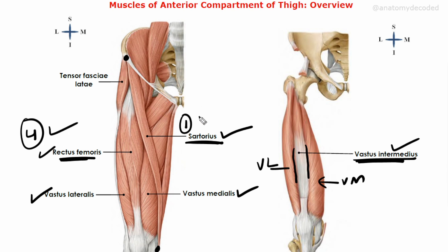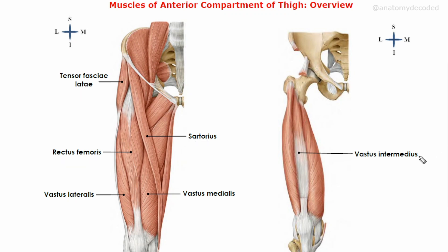Quadriceps femoris accounts for four muscles, sartorius one — that's five. There is also tensor fasciae latae, present on the lateral aspect of the thigh but seen in the anterior aspect during dissection, which is why it's included here. In most books this muscle is placed in the gluteal region because of its nerve supply, similar to gluteal muscles. Additionally, there is articularis genu, a muscle arising deep to vastus intermedius along the lower part of the femur.